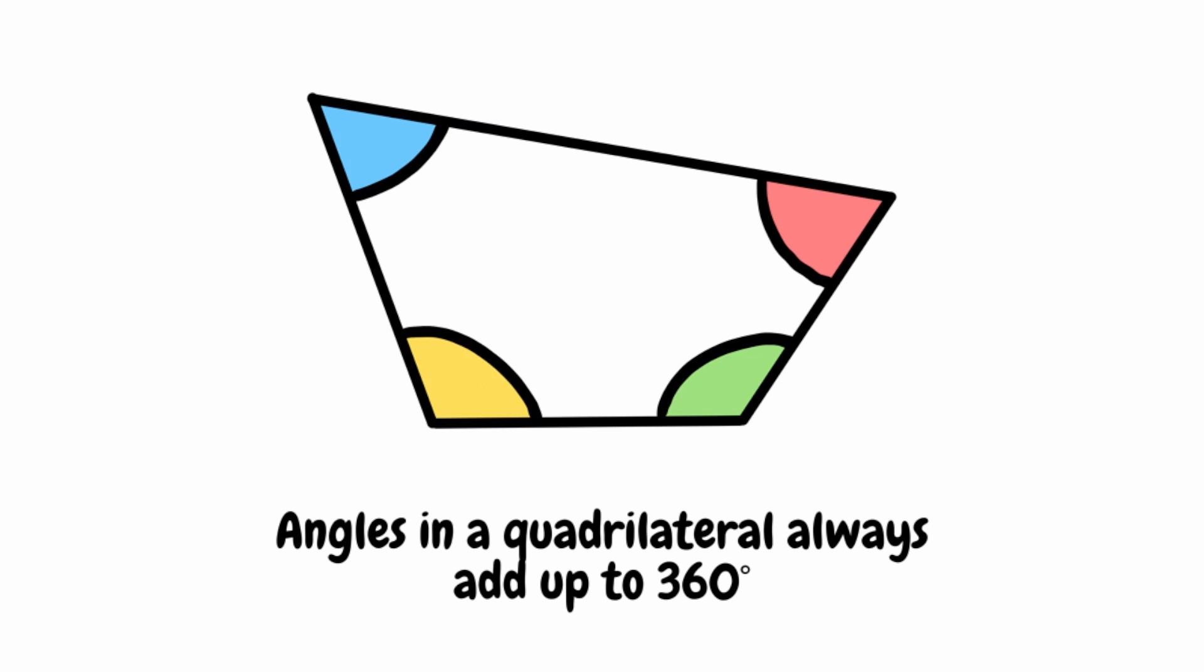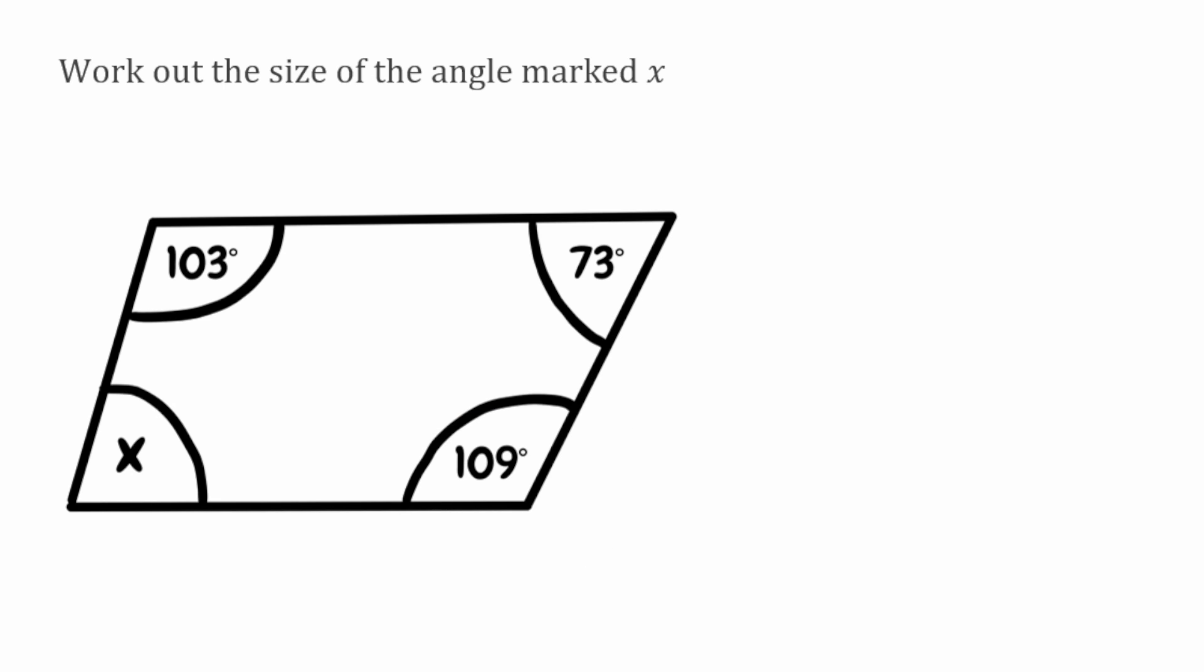So let's use that now to have a go at some of these questions. For this first question we want to work out the size of the angle marked x. Using our rule, the angles in a quadrilateral will always add up to 360, all we have to do in this scenario is add up the angles we know and then once we find that total we can take that away from 360. So what I'm going to do here is take my 103, add it onto the 73 and the 109, and that will give me 285.